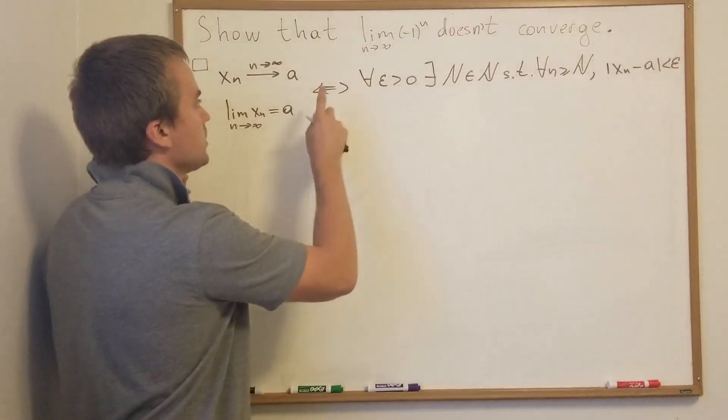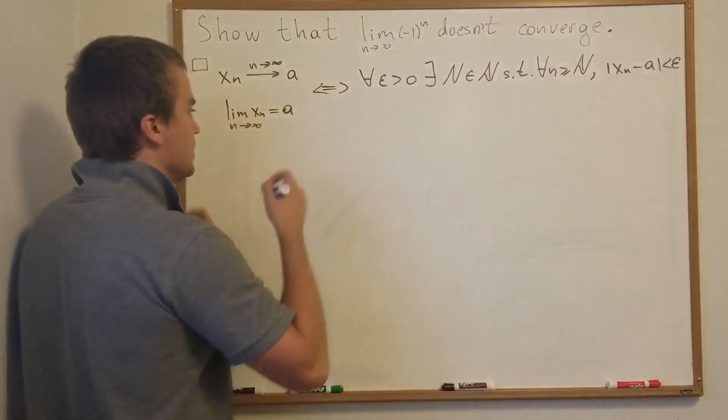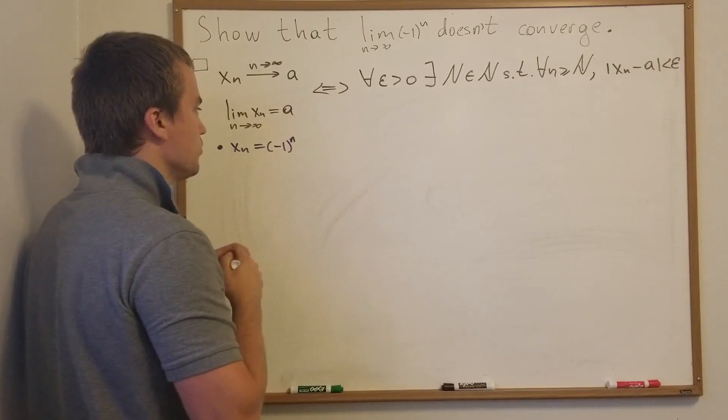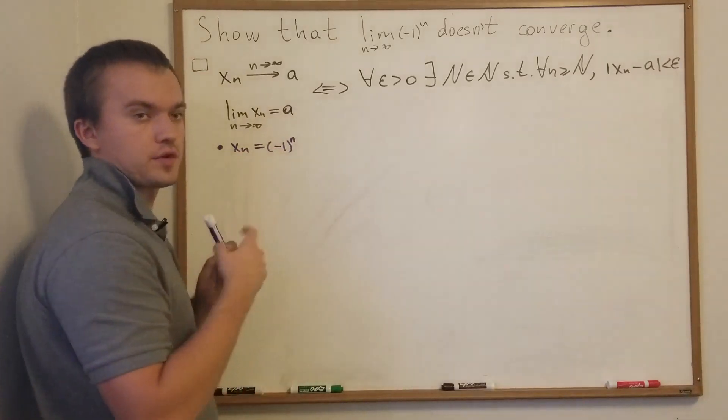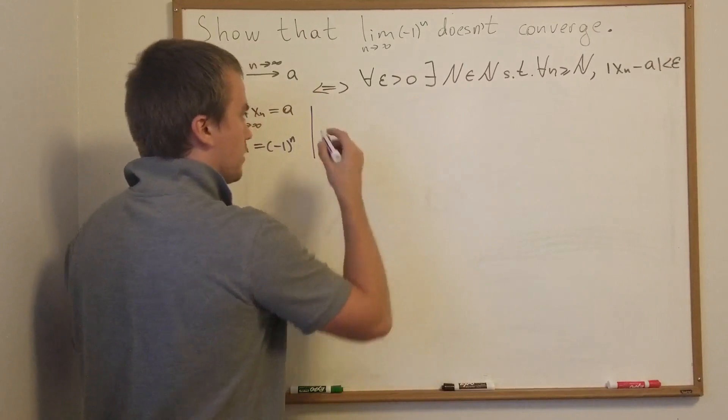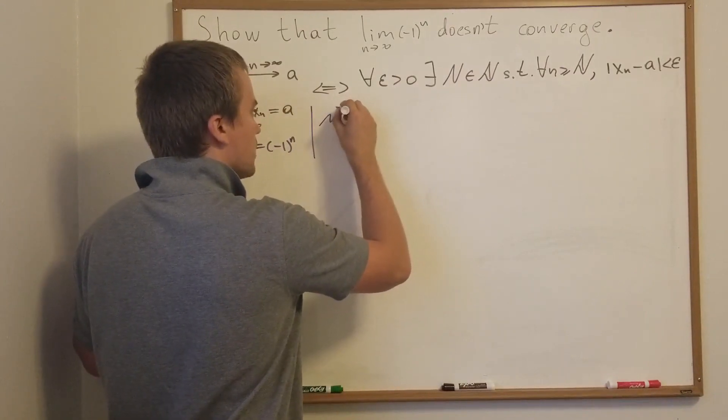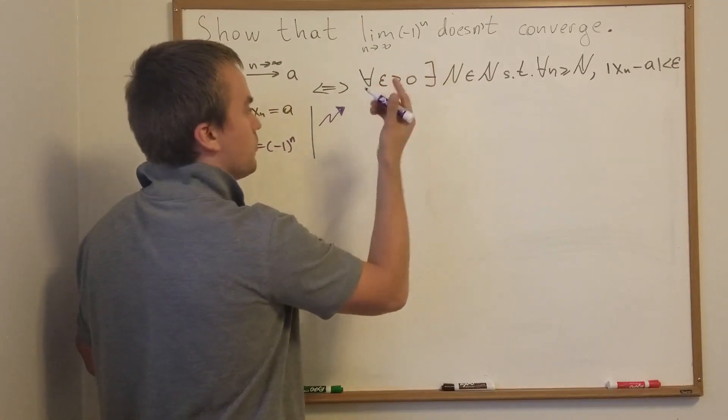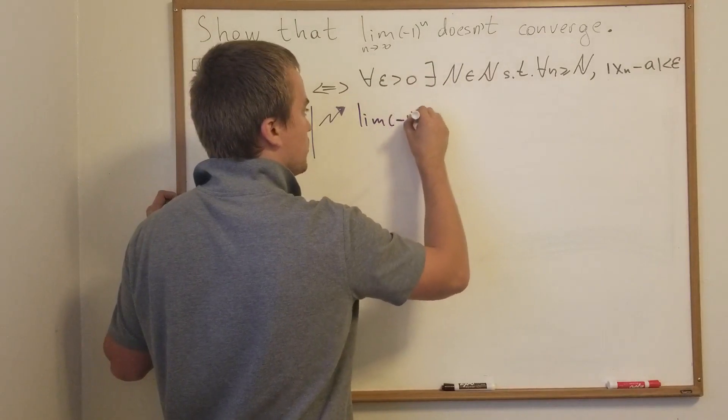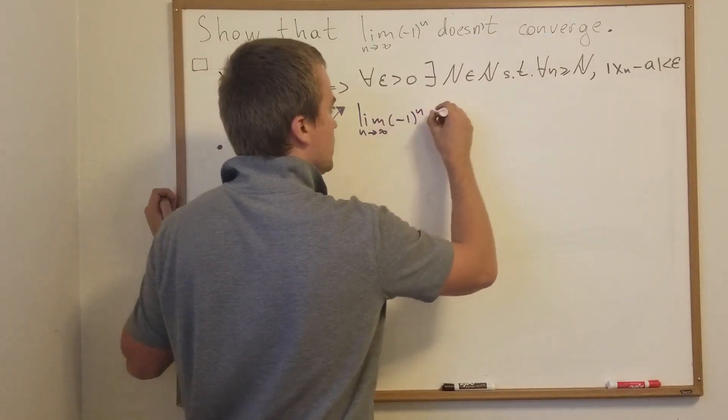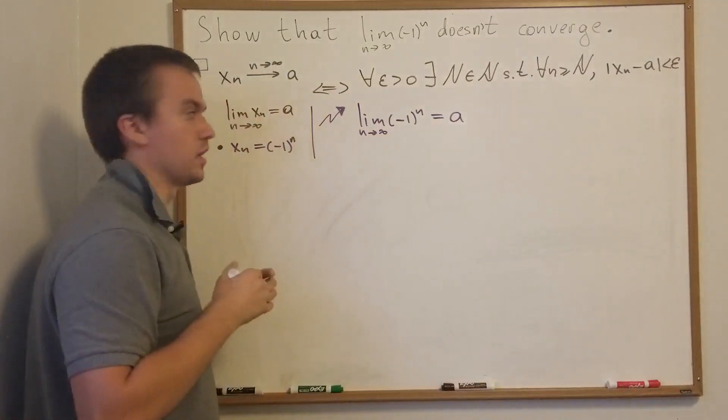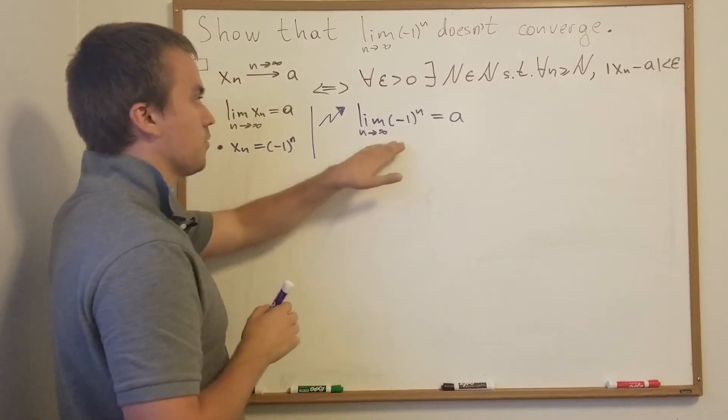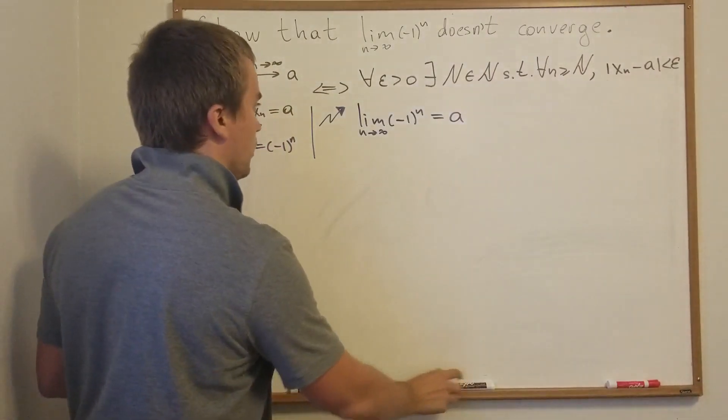Okay, and what is xn in our case? xn in our case is negative one to the power of n. So what I'm assuming—I'm proving by contradiction, and I'm going to use my favorite sign for proof by contradiction. So I'm assuming that this limit exists. In other terms, this limit converges, so I'm saying that the limit of negative one to the n when n approaches infinity equals a. It means it converges according to our definition, and then I'm going to get a contradiction.